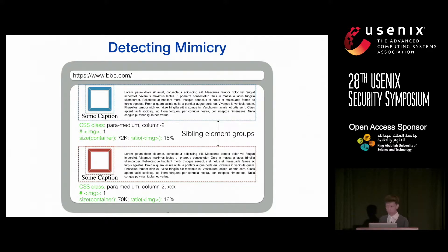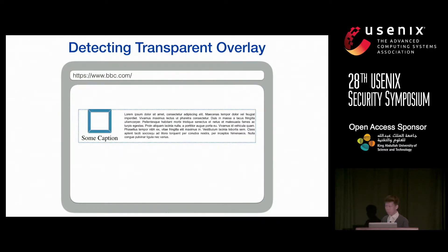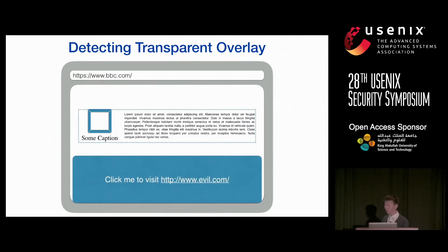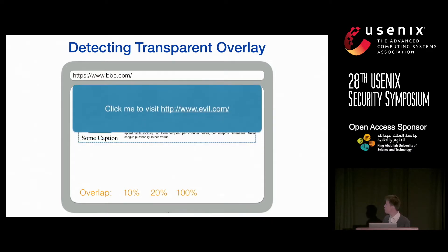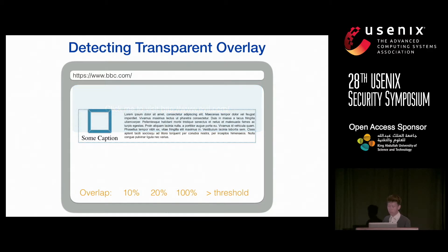We admit this similarity approach is not a perfect solution and there are better algorithms, but it's not the focus of our work. For transparent overlay elements, we look for large elements that could cover first-party elements. Since we don't know how users interact with the page or the browser window size, and element positions shift as users scroll, we virtually scroll the page vertically and horizontally to calculate overlap with first-party elements. If the maximum overlap exceeds some threshold, we flag the element as potentially covering first-party content, then also check its opacity value — if very small, we label it a transparent overlay.